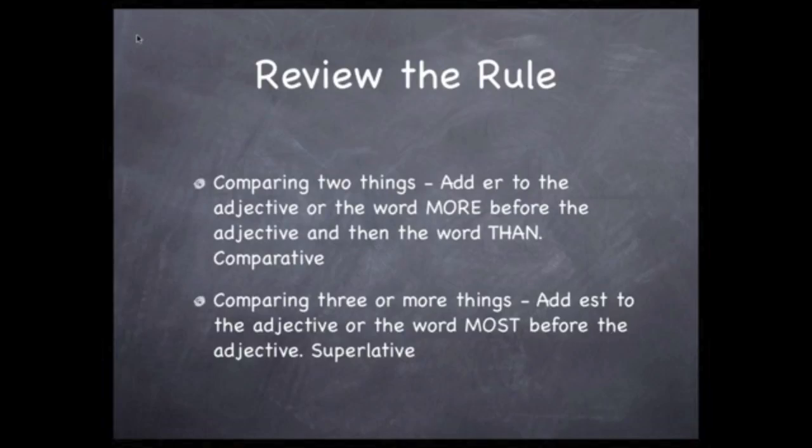So to review, when comparing two things to each other, we use the comparative by adding er to the end of the adjective. We can also use the word more before the adjective, which we must do with certain words. When the comparison involves three or more objects, we use the superlative by adding est to the end of the adjective. We can also use the word most before the adjective, which we must do with certain words.